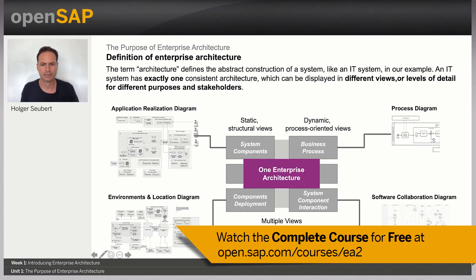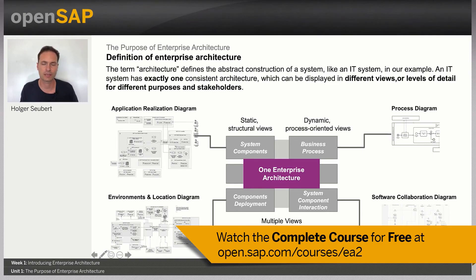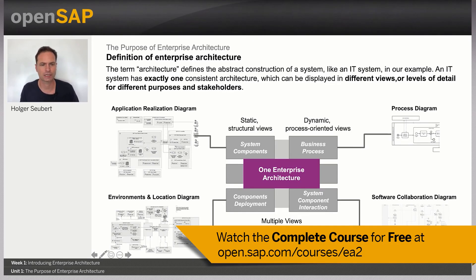Having talked about the goals and how you basically do enterprise architecture, let's wrap up the definition. The architecture you define abstractly describes a construction of a solution, such as an application. It is worth emphasizing that one system or one application has exactly one architecture. This architecture can be communicated, presented, and displayed in different views with different levels of detail and different focus areas. You basically choose a view depending on what you want to communicate and who you are talking to.